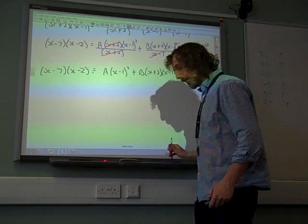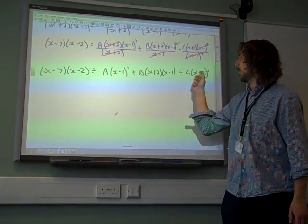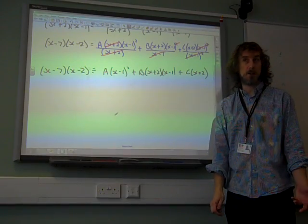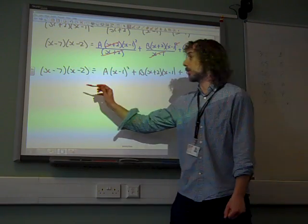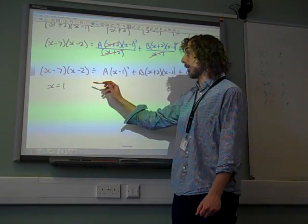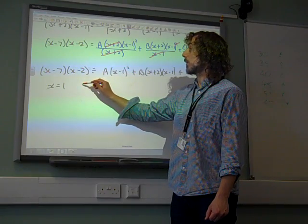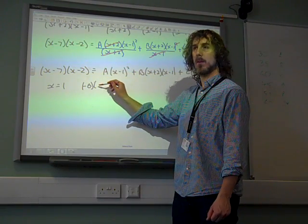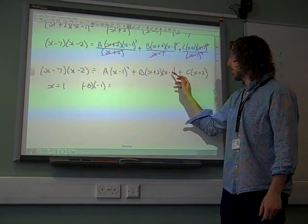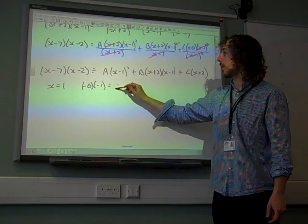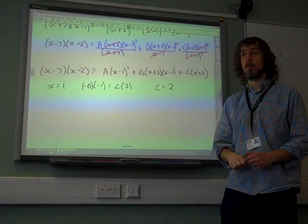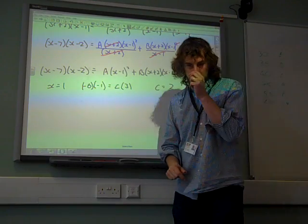Now we see we've only got two values that we can sub in, because there's only two factors in there. So we're going to start with those two values, because that makes it easier to begin with. We're going to sub in x equals 1, which, being very careful with our calculations, gives us negative 6 times minus 1. a times 0, so that'll go. b times 0, we're left with c times 3. So c equals 2. 6 divided by 3 equals 2. So that's a good start.